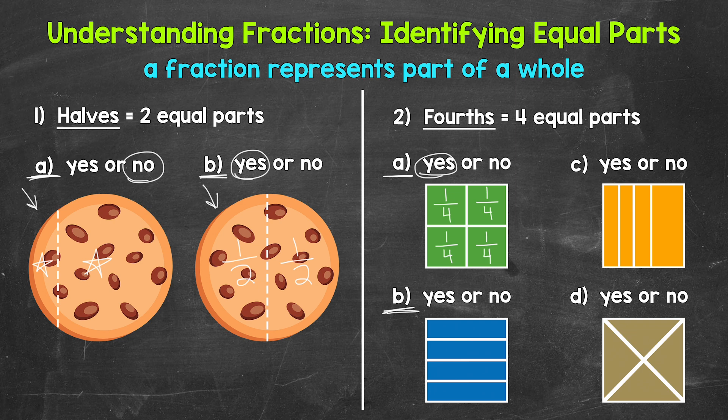Moving down to B — do we have fourths here, four equal parts? Yes, and again each part is going to be one-fourth of the whole. So yes, we have fourths for B. Moving on to C, do we have fourths here? No, we do not. These parts are not equal; they are not the same size. So we do not have fourths. Since the parts are not equal, each part is not one-fourth of the whole. So again, we do not have fourths here.